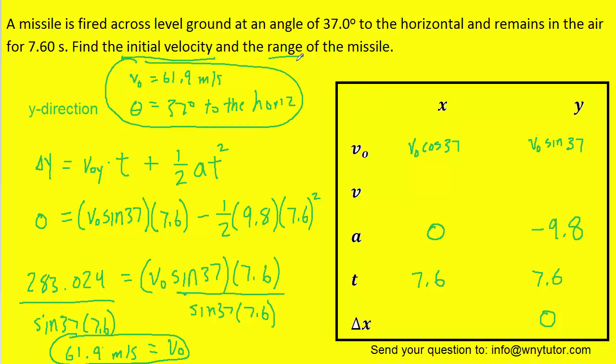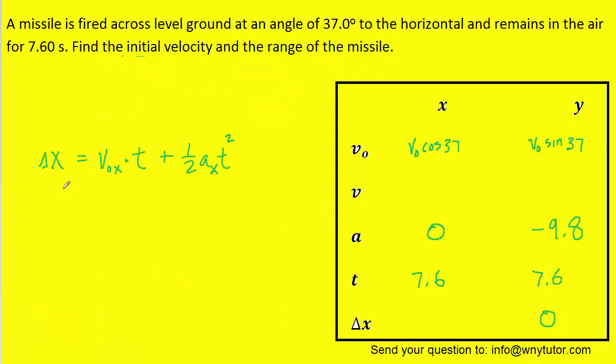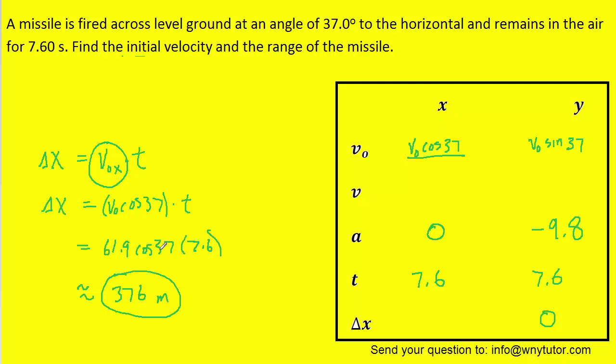And now we're ready to calculate the range. Now range is simply the displacement in the x direction. So really we're just looking for this delta x. So we're actually using the same equation, but this time we're doing it in the x direction. And since the acceleration in the x direction was zero, we know that we can completely eliminate this term right here. And then at this point it's just a matter of filling in the known information. Note that the initial velocity in the x direction was v-naught times the cosine of 37. So we actually should plug that in first before we plug in the known values. And then now we can take the initial velocity of 61.9 times the cosine of 37. And then again the time was 7.6 seconds. So we'll plug this in. And when we do we get 376 meters. So that would be the range of the missile.